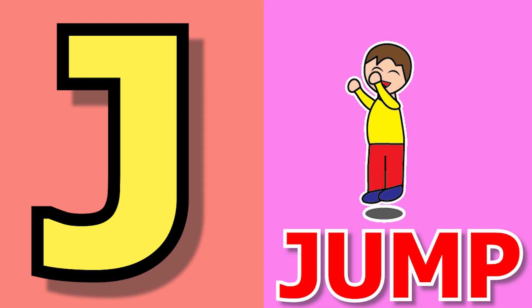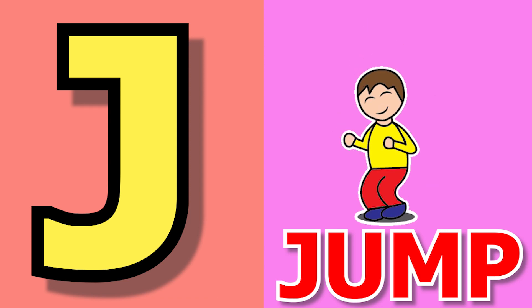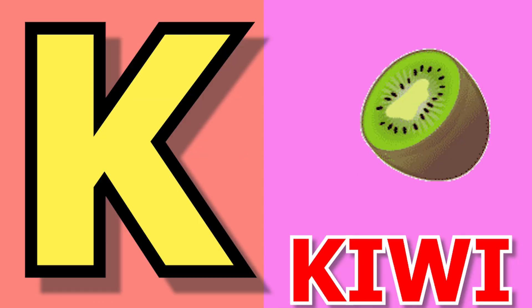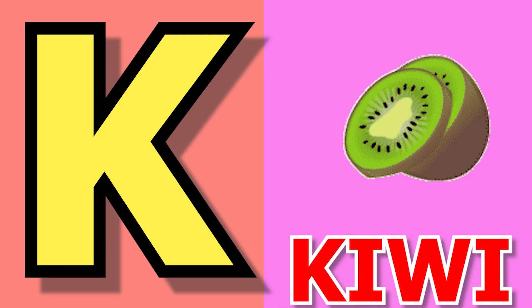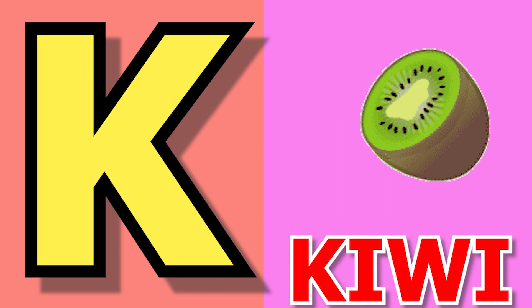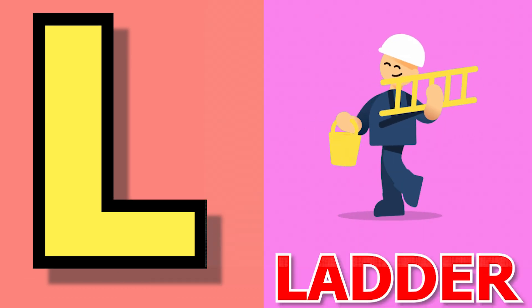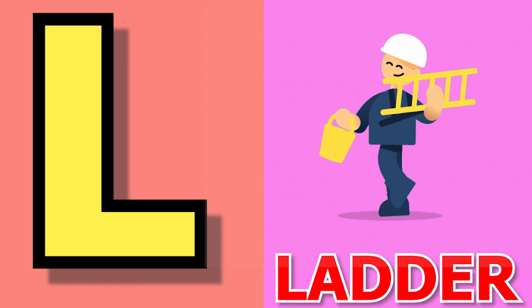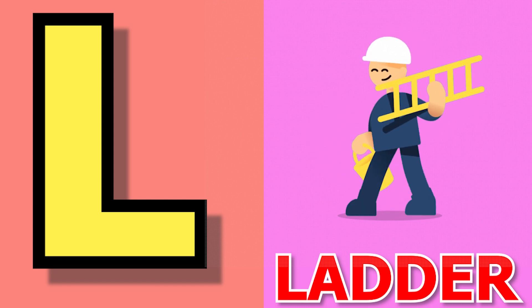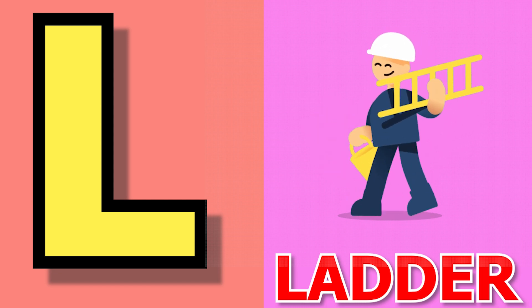J for jump, jump means kudana. K for kiwi, kiwi means kiwi. L for ladder, ladder means cd.